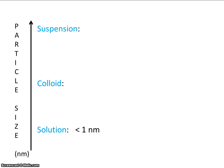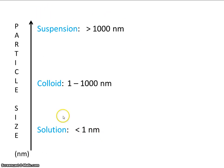Solutions have the smallest particles, colloids have intermediate sized particles, and suspensions have the largest particles. It's not important that you remember these numbers — I just wanted to show them to you so you get a general idea.